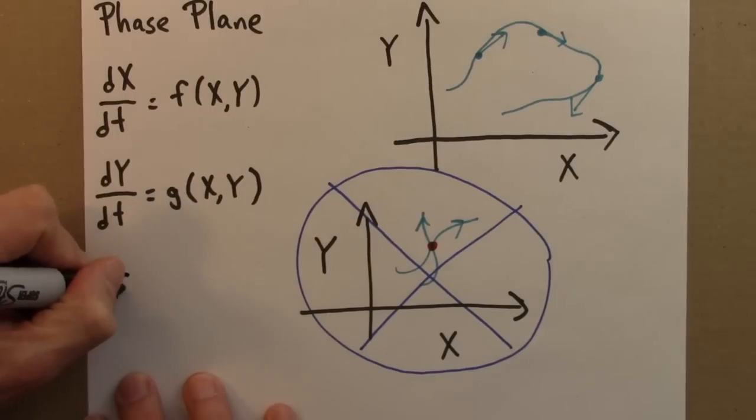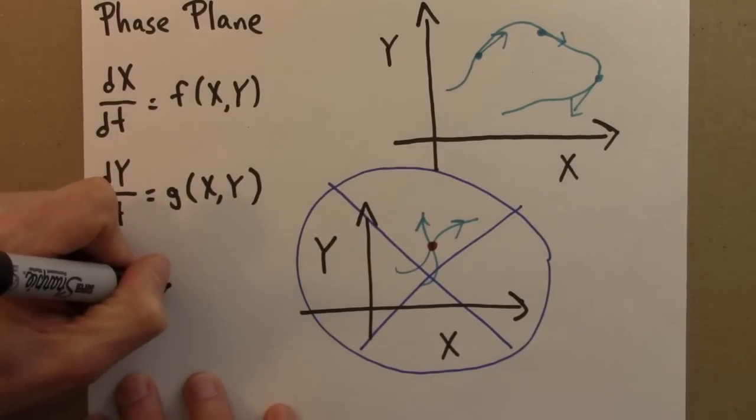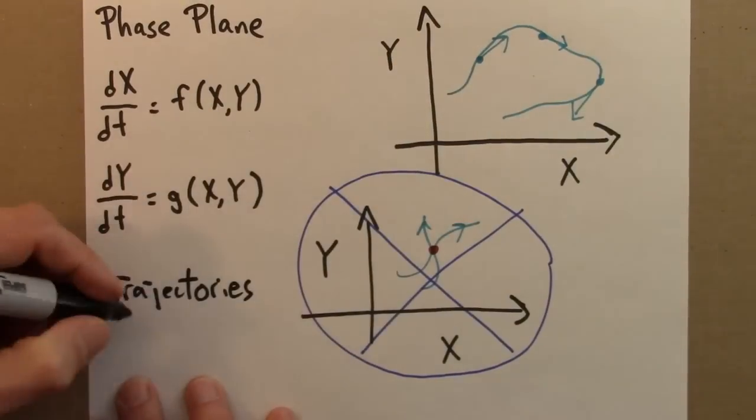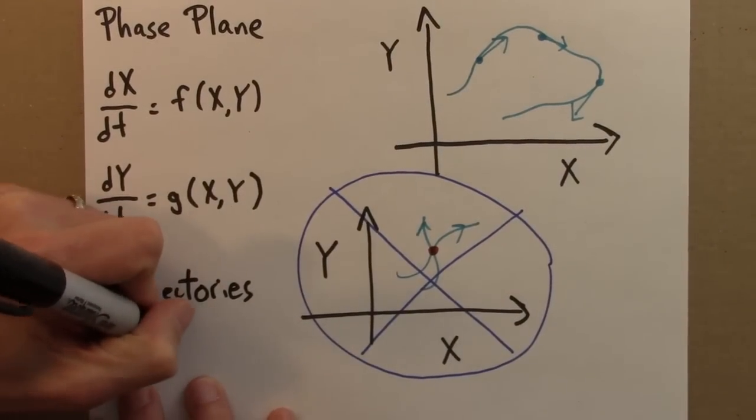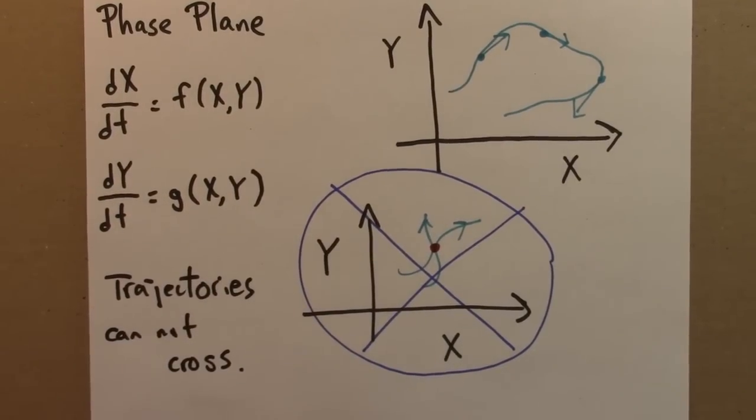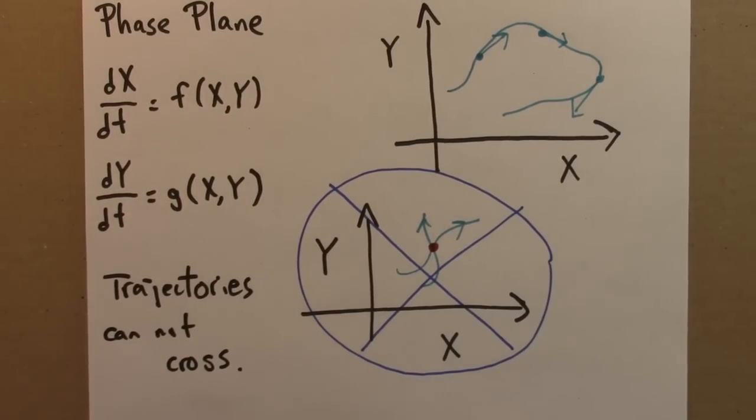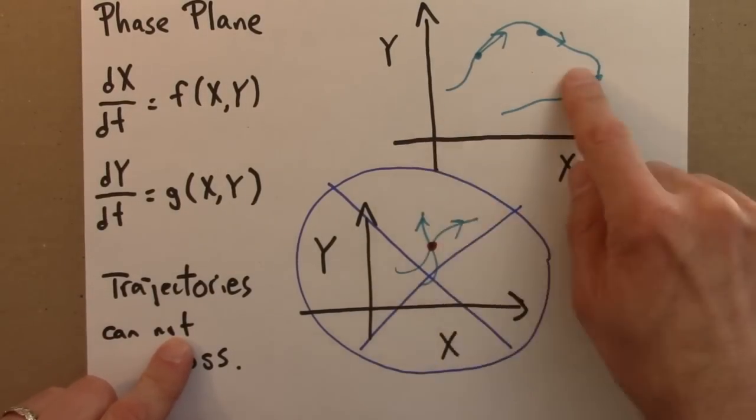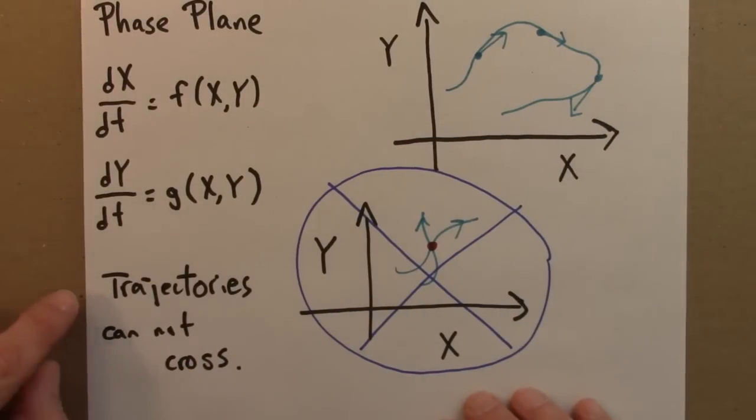And the conclusion is that in the phase plane, trajectories cannot cross. So we can have all sorts of other behaviors. It can loop around. It can cycle. It can go to a fixed point. It can go off to infinity. But the only rule is that trajectories can't cross. In the next video, I'll present a few more examples. And we'll see one of the important consequences of this fact.